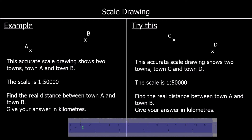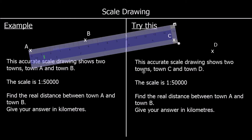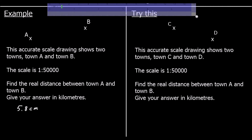Here is another example. We have a drawing showing two towns, Town A and Town B. The scale is 1 to 50,000 and we need to find the real distance. Measuring the distance on the drawing, it's 5.8 cm between them. The real distance is going to be 50,000 times as much, since every 1 cm on the drawing is 50,000 cm in real life. So we do 5.8 times 50,000 to get our real distance.